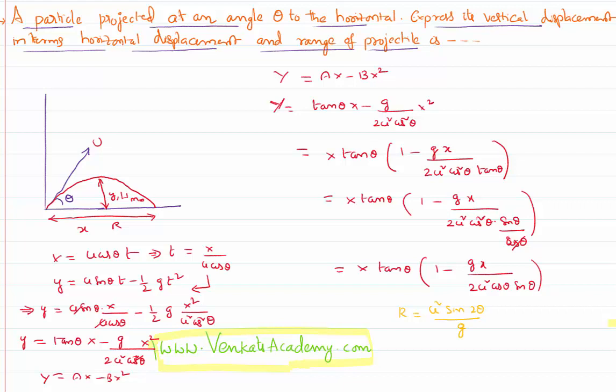If you rewrite this above equation, y = x tan θ (1 - gx / u²). I have 2 cos θ sin θ, that's nothing but from trigonometry sin 2θ. So it's very clear from this that u² sin 2θ / g is nothing but the reciprocal of what we have.